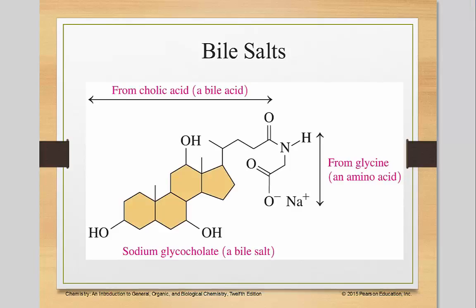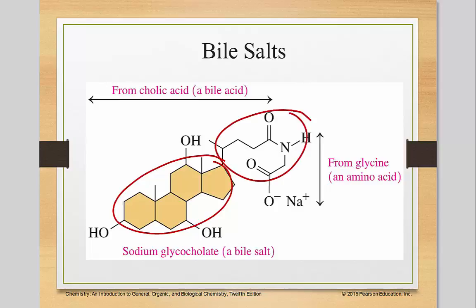Here is your steroidal nucleus, and this is a bile salt. Here's a chain here, but notice we have an O and Na here — that's the salt portion. This area here is what's going to make it soluble in water.